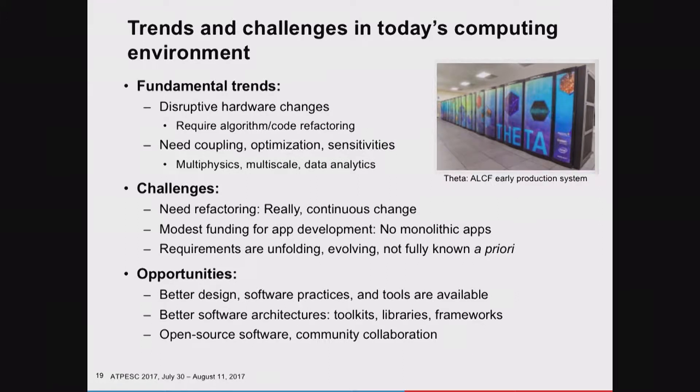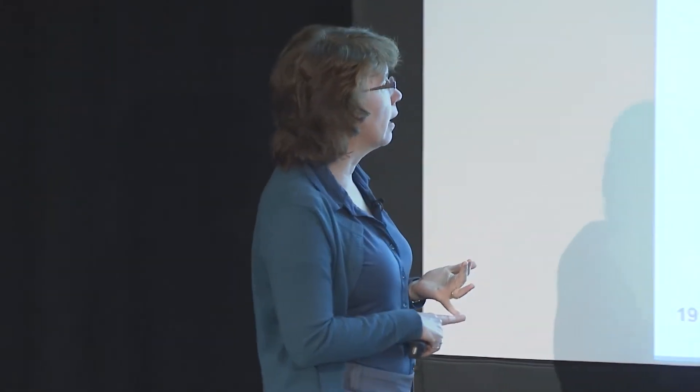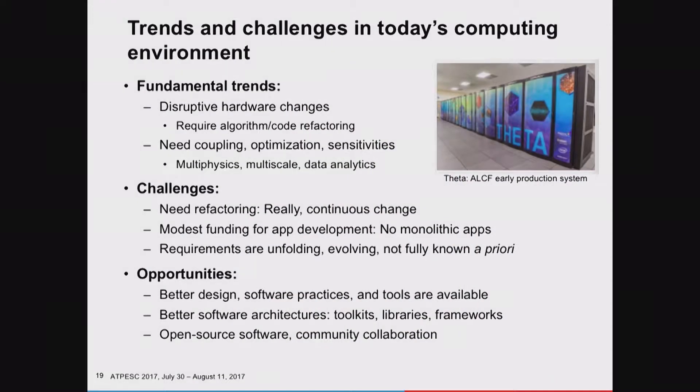All of this software is complicated by today's architectures—Jack talked about that. The fundamental trends are the disruptive hardware changes that require a lot of algorithm and code refactoring, and the fact that we want to be doing more multi-physics optimization-type applications. The codes really are in an environment where almost continuous change is required because the architectures are changing so rapidly. We have to design our software so that tools are going to be readily available, highly efficient, and performance portable across a wide range of different architectures. It's really kind of a renaissance in architectures right now.